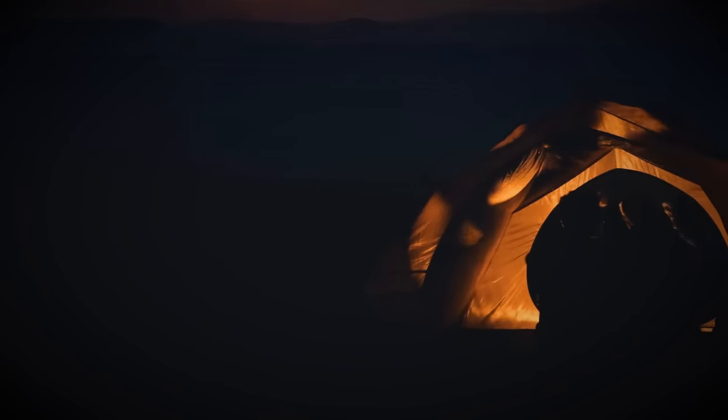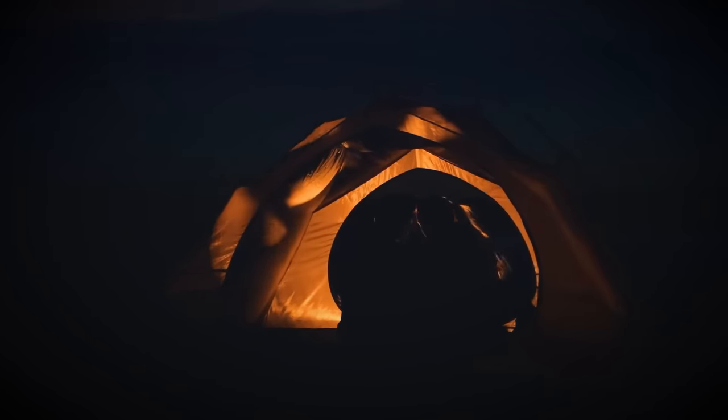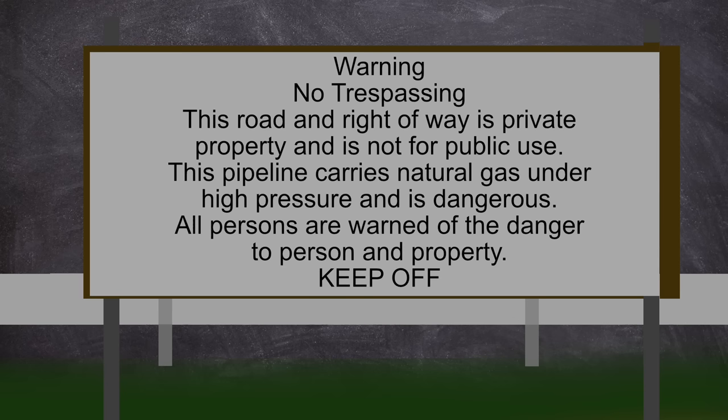You know how during the video preamble I described a lovely calm and serene campsite? Well the campers, who would ultimately be the victims, were actually camping right next to a private service bridge which carried two gas pipelines. The bridge was roped off and multiple signposts were in the area saying: Warning, no trespassing. This road and right of way is private property and is not for public use. This pipeline carries natural gas under high pressure and is dangerous. All persons are warned of the danger to person and property. Keep off.